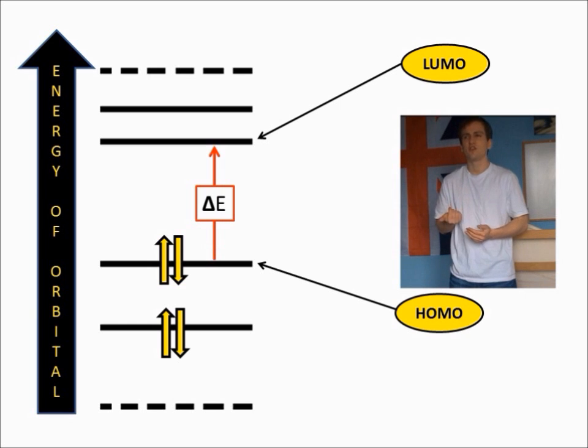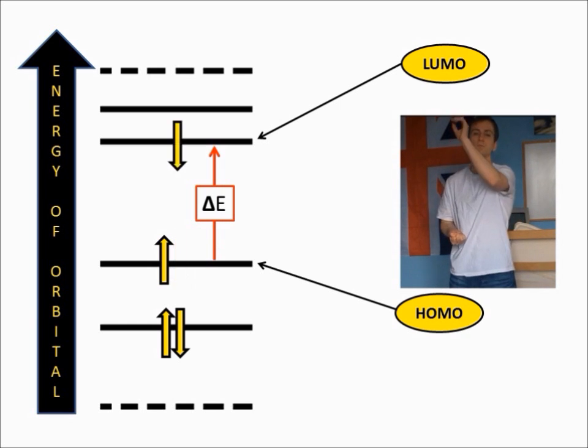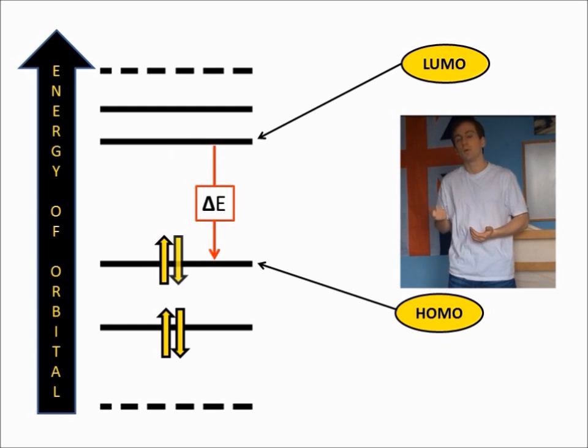If we were to supply this energy, then a molecule would excite and promote an electron from the HOMO to the LUMO. If we were to allow this molecule to de-excite, then the electron would jump back down from the LUMO to the HOMO, and in the process, re-release this energy.